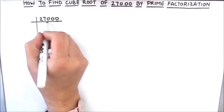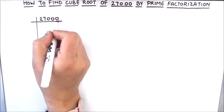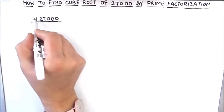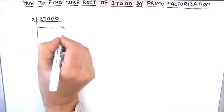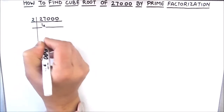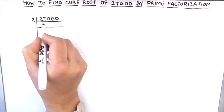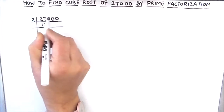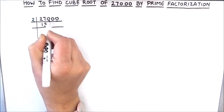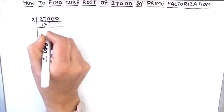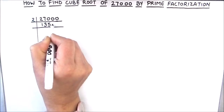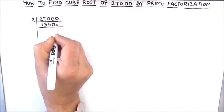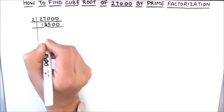27000 is an even number, so we can easily divide it by 2. 2 times 1 is 2, 2 times 3 is 6, 1 is carried over so this becomes 10, 2 times 5 is 10, and 2 times 0 is 0. So 27000 divided by 2 gives us 13500.